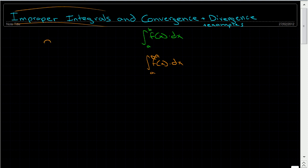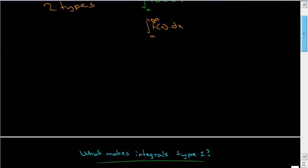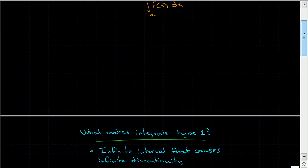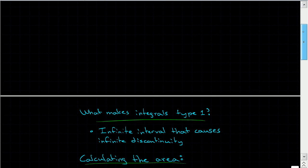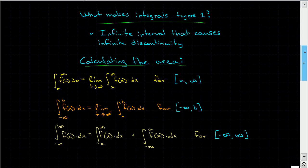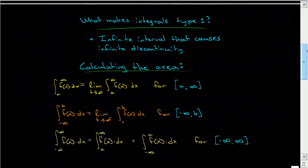There are two types. I'll go over the first type — Type 1 improper integrals — and do a few examples. In the next video, I'll go over Type 2. What makes an integral Type 1 is that it has an infinite interval causing an infinite discontinuity, meaning it just goes on forever. We can have intervals of a to infinity, negative infinity to b, or negative infinity to infinity.